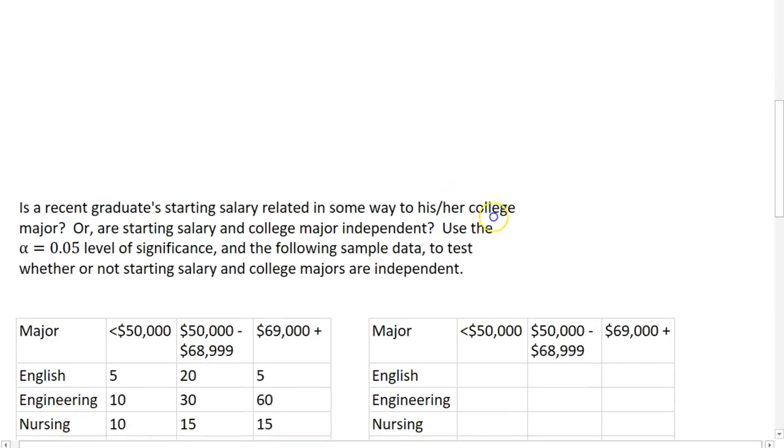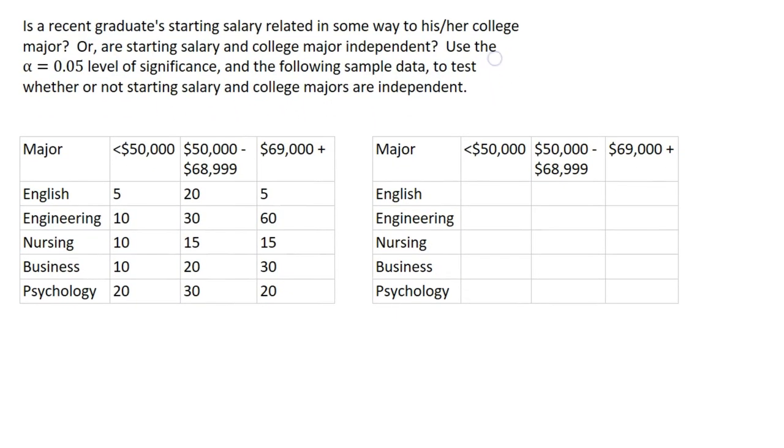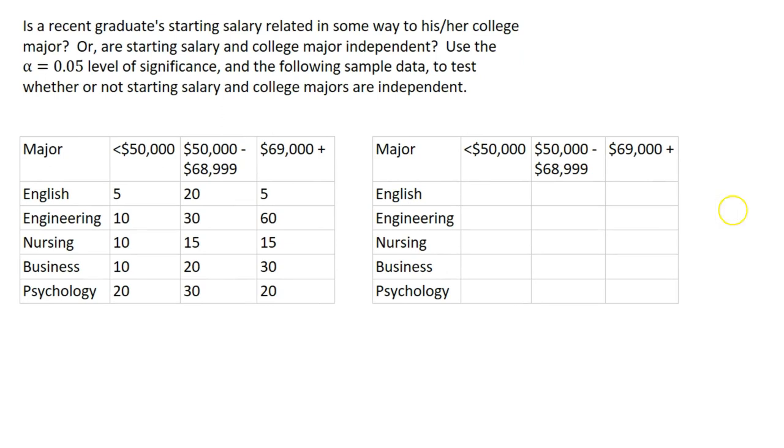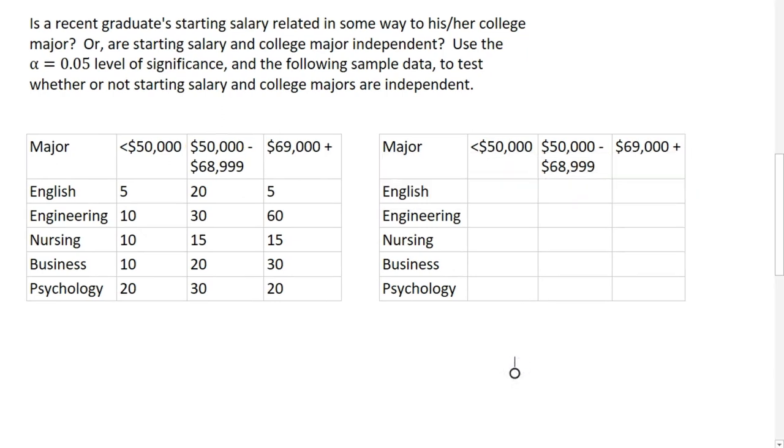Let's look at an example. The question we want to answer here is whether or not a graduate's starting salary is related in some way to his or her college major. Or are starting salary and college major independent? So we're going to use the .05 level of significance and the following data to test whether or not these two variables are independent.